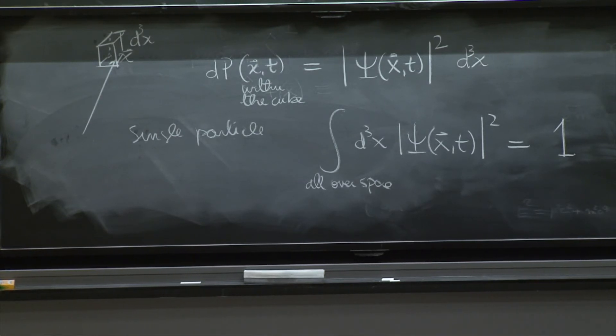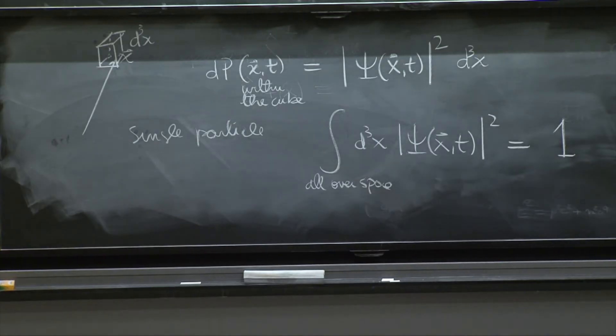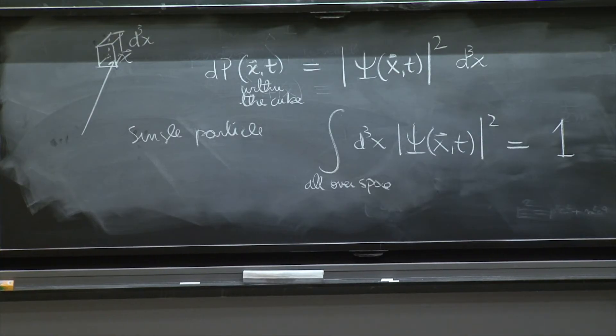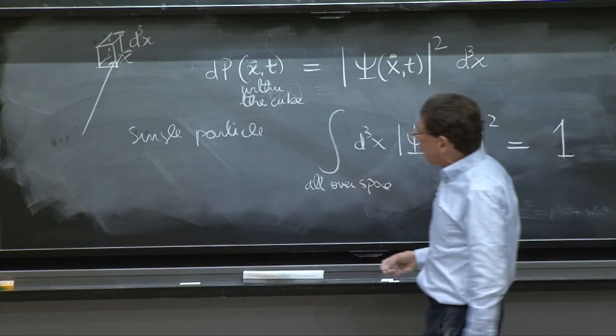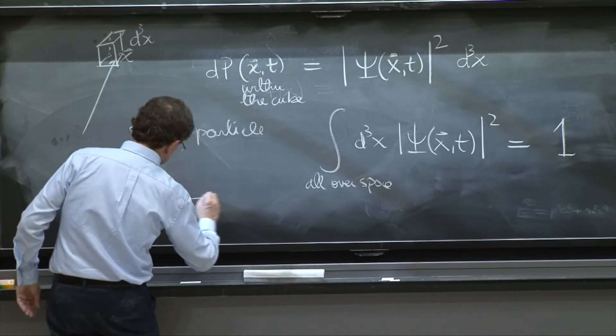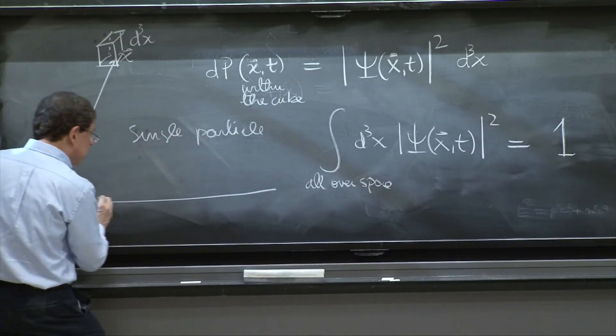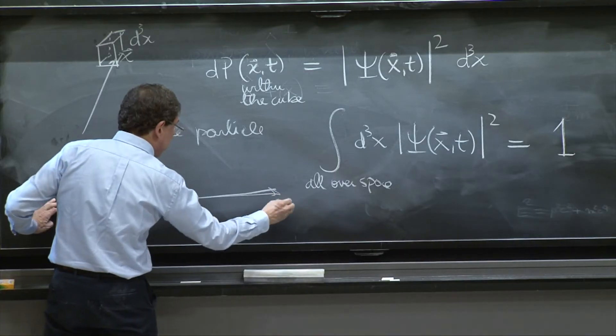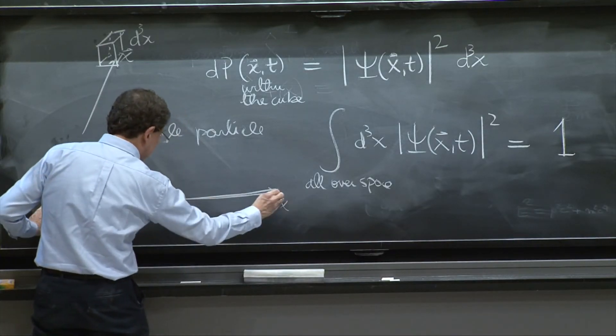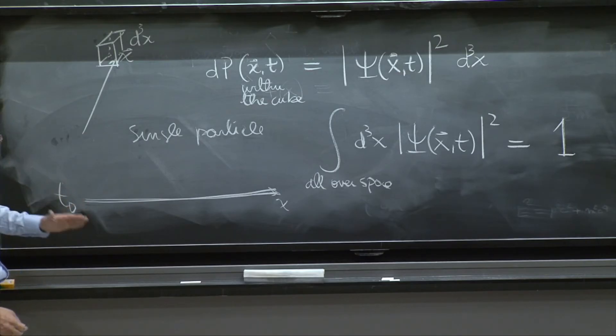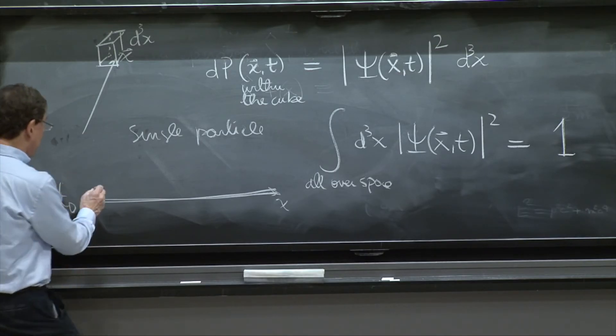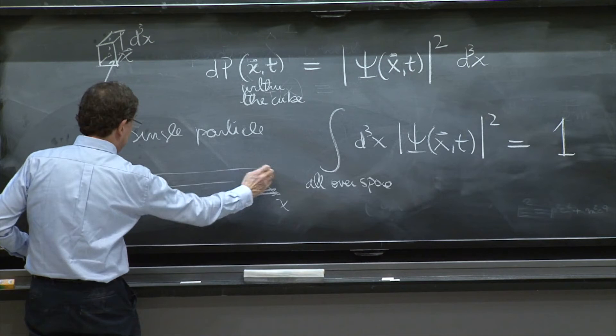So it better be that this is true, and this poses a set of difficulties that we have to explore, because you wrote the Schrodinger equation, and this Schrodinger equation tells you how psi evolved in time. Now, a point I want to emphasize is that the Schrodinger equation says suppose you know the wave function all over space, you know it here at some time t naught.